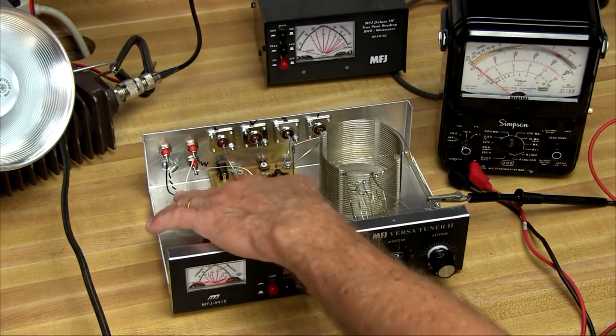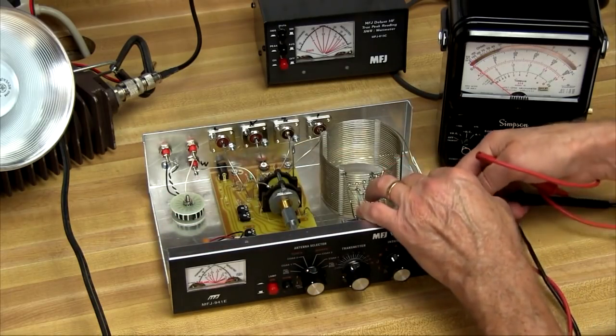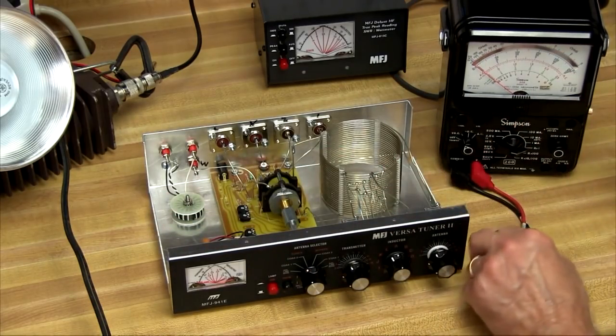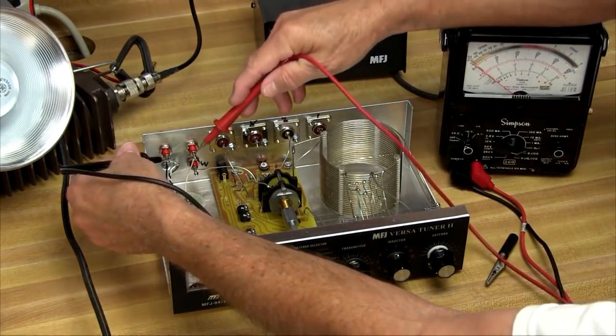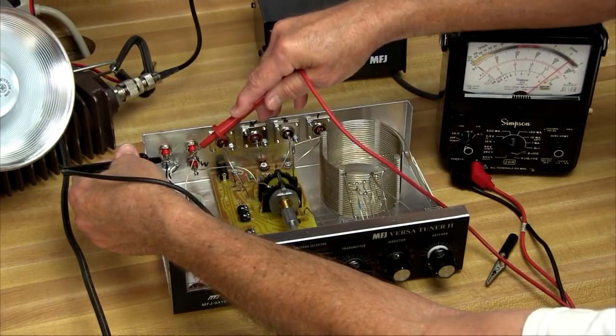We'll want to check our balun here that's used for balanced lines. That's simple enough to do. Basically, all we do is measure across the two terminals for the balanced line, and we've got continuity there.